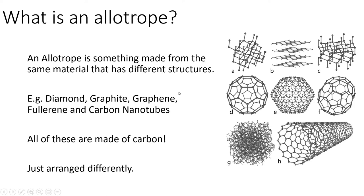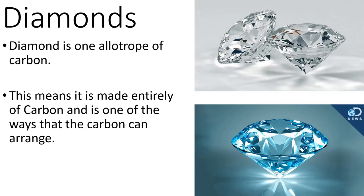We've got diamond, graphite, graphene, fullerene and carbon nanotubes - we'll look at all of these in more detail in later lessons. Today we're just focusing on diamond. Importantly, all of these allotropes are made out of carbon, but they're just arranged differently. Diamond is one of the allotropes of carbon, which means that diamonds are made entirely of carbon - which is pretty crazy to think that the same thing that makes up coal makes up diamonds.